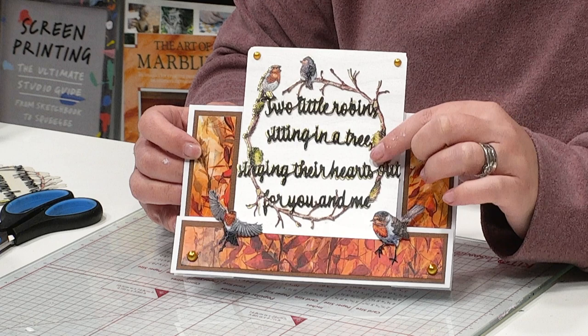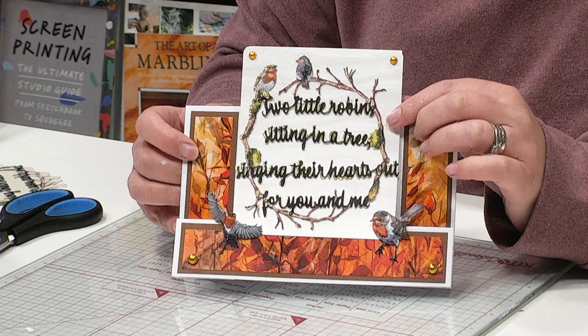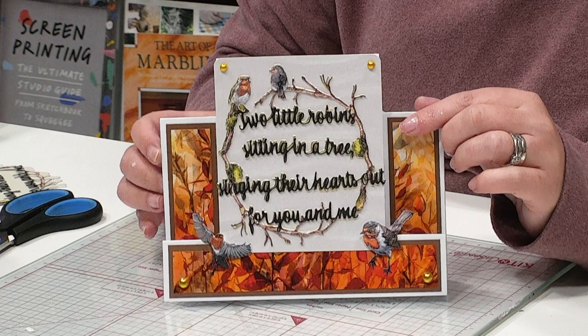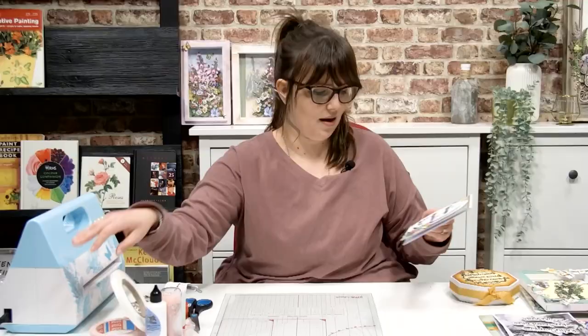But do consider replicating what Vicky has done. She's put a little gold behind. So she's cut the die once from a gold cardstock, then cut it again using that reflection artwork and done a little drop shadow with that gold. And it really makes the sentiment pop there as well.